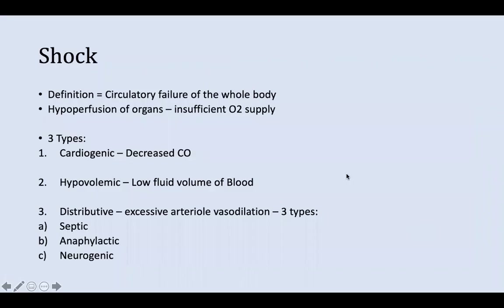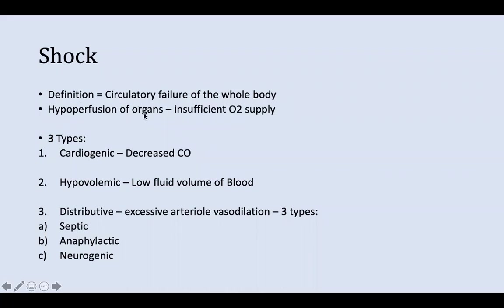Now shock. The definition is circulatory failure of the whole body, with hypoperfusion of the organs and insufficient oxygen supply. There are three main types: cardiogenic, hypovolemic, and distributive. In cardiogenic shock, there's decreased cardiac output due to injury or obstruction preventing the heart from pumping efficiently, resulting in decreased stroke volume and cardiac output. It can arise from arrhythmias, myocardial infarctions, or anything that damages more than 50% of the heart.